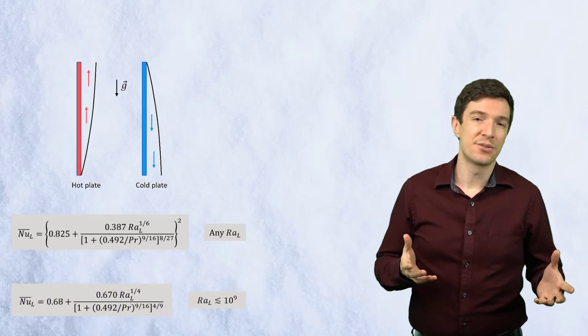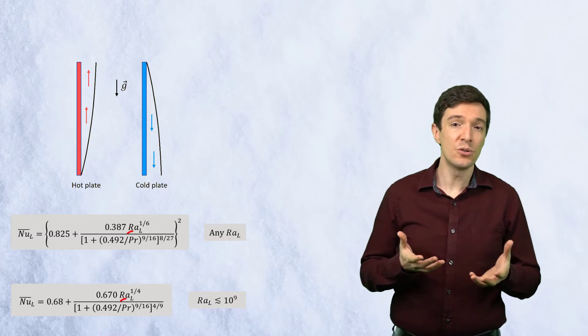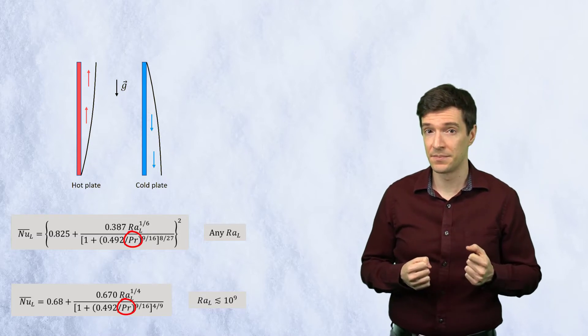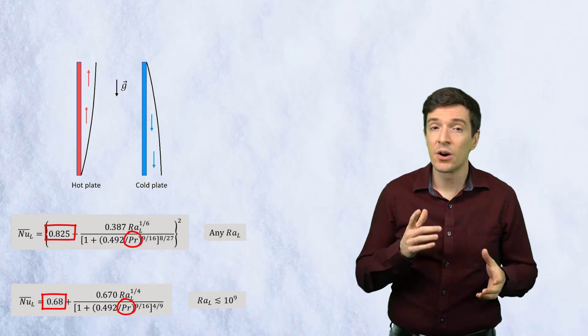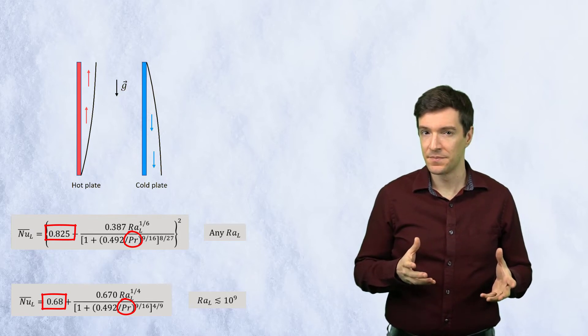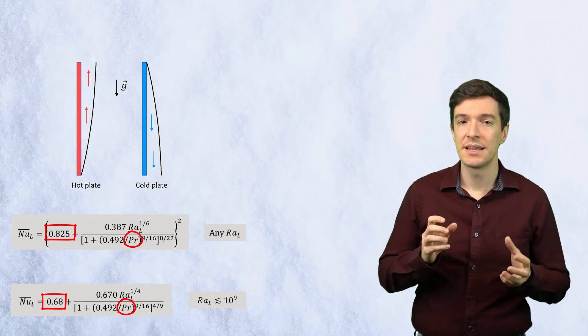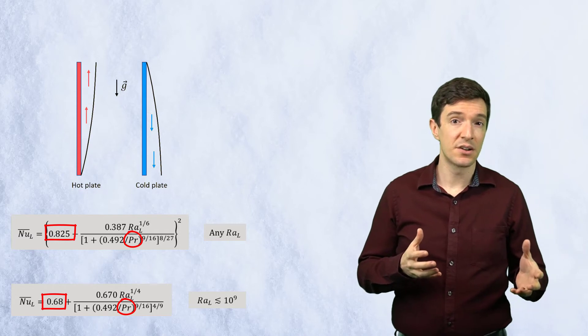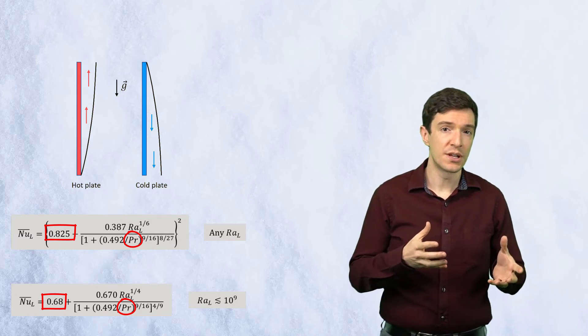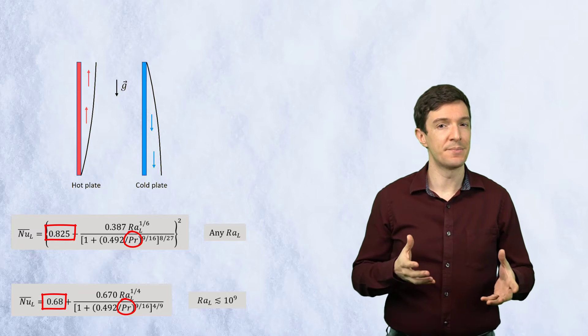Looking at these correlations, we can see that they are also a function of the Rayleigh number, and that a constant term is present. This constant takes into account the effects of heat conduction for flows at small Rayleigh numbers.